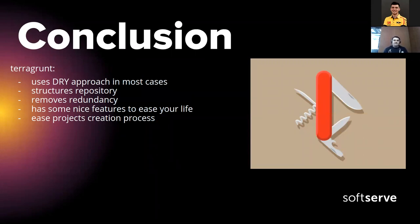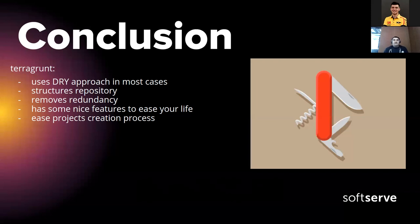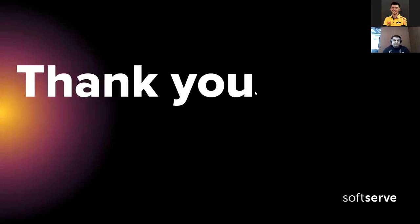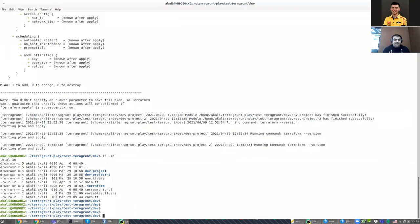In conclusion, Terragrunt is a Swiss knife for Terraform — it uses the DRY approach, structures your repository, removes redundancies, lets you do things from a single place, has nice features to ease your life, and simplifies the project creation process. Adding new projects to your repository becomes very simple — you don't need to define many things, you just use the existing structure.